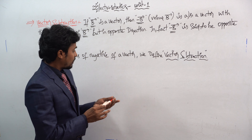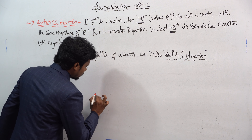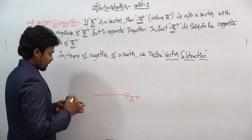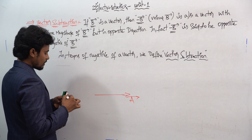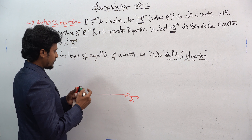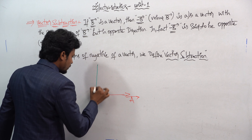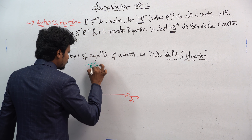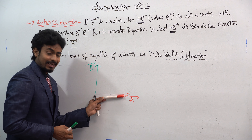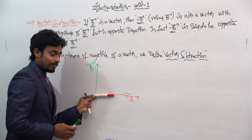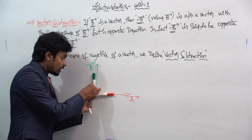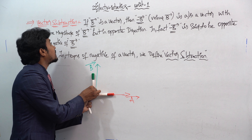I will be taking two vectors here. Suppose this be vector a-bar — the red one — and this be vector b-bar — the green one. So how can we define vector subtraction?